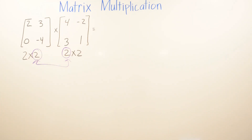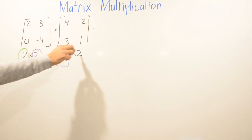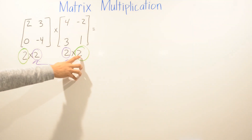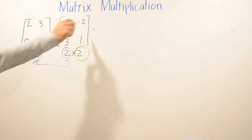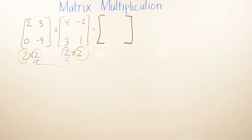Once you find out they're both 2, you can multiply the matrices. The next question is: what size will the result be? To find out, you take the number of rows from the first matrix and the number of columns from the second matrix. Here you have a 2 and another 2, so at the end you're going to have a 2 by 2 matrix as well.